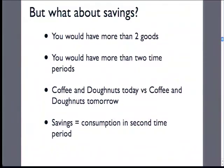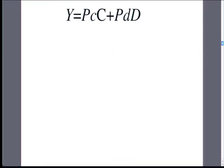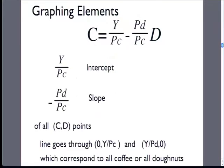We want to graph this with quantity on each axis and solve for one of the quantities — preferably on the y-axis. The budget constraint is income equals price of coffee times coffee quantity plus price of donuts times donut quantity. Solving algebraically for coffee: coffee = (Y / P_coffee) minus (P_donuts / P_coffee) times donuts. The first term, Y over P_coffee, is the intercept; the second term, minus P_donuts over P_coffee, is the slope. These are quantities — quantity of good one and quantity of good two.